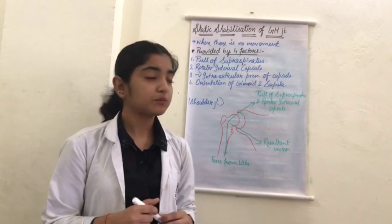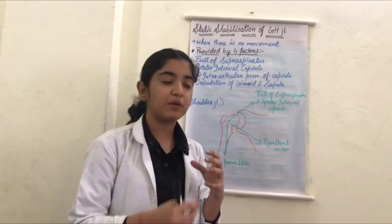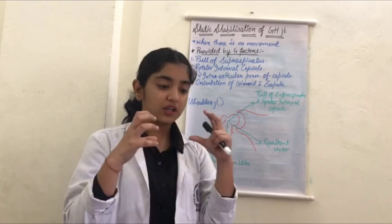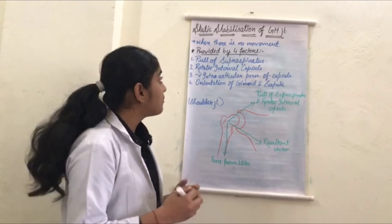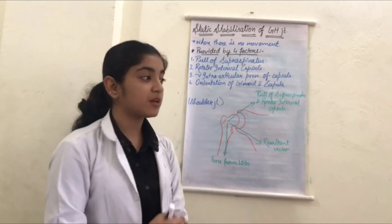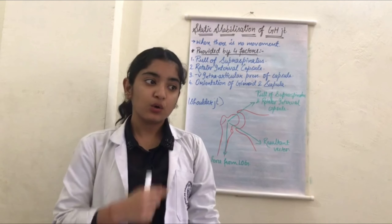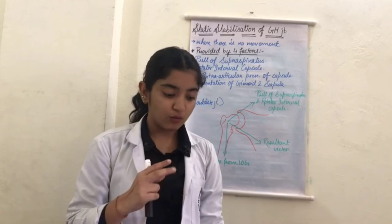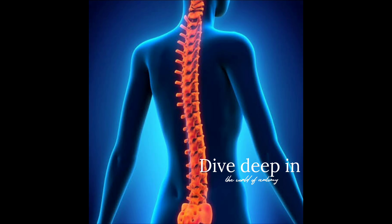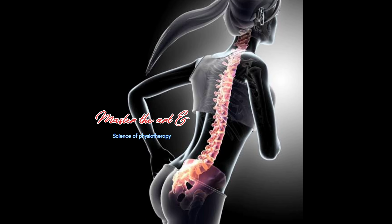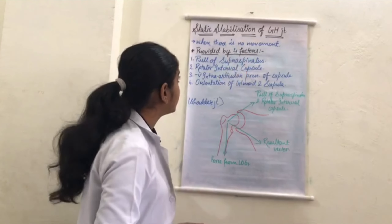Why does it stay in place? There are many factors in our body that maintain the stability of the humeral head and glenoid, keeping them stable in one place. There are two main categories: static stability — when there is no movement, how is the joint fixed? — and dynamic stability — what factors keep the joint stable during movement? We will study these separately, starting with static stability.